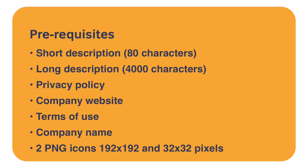I don't recommend you do this in production without a test, so run through a test first so you can get this stuff right. You're going to need a short and a long description, a link to a privacy policy, the company website and a terms of use page, the company name, and two icons of very specific sizes. They have to be of a certain size so you may need to speak to someone who manages your images. The icons are used in the Teams app itself and in the app catalogue, and I'll put a link in the description that shows you how to prepare the icons.